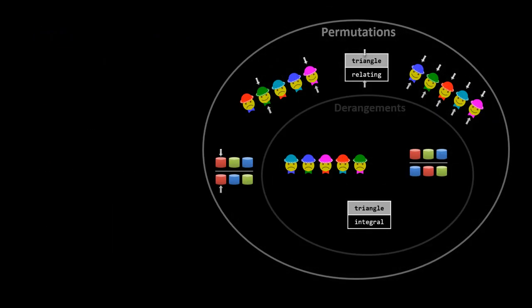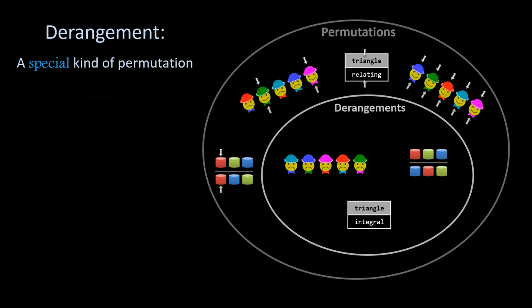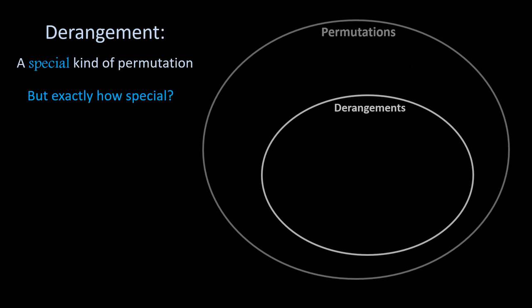So to sum up the premise, a derangement is a special kind of permutation, but we'd like to find out how special exactly. That is, if you throw an arrow at the permutations, where every one of them has an equal probability of getting hit, what are the odds that it will land within the derangement area?